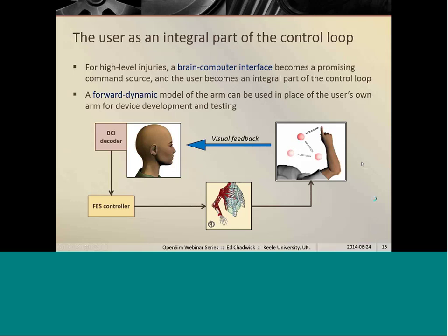The user can then modulate the command signal that they give to the BCI in order to control that arm and perform the task that they require to complete. So that kind of scenario was really the motivation for having a fast forward dynamic simulation because obviously for this loop to work correctly, this model has to simulate the movements of the arm in real time. So that's fed back to the user and allows them to make modifications to their command. So that's the motivation for our work here.